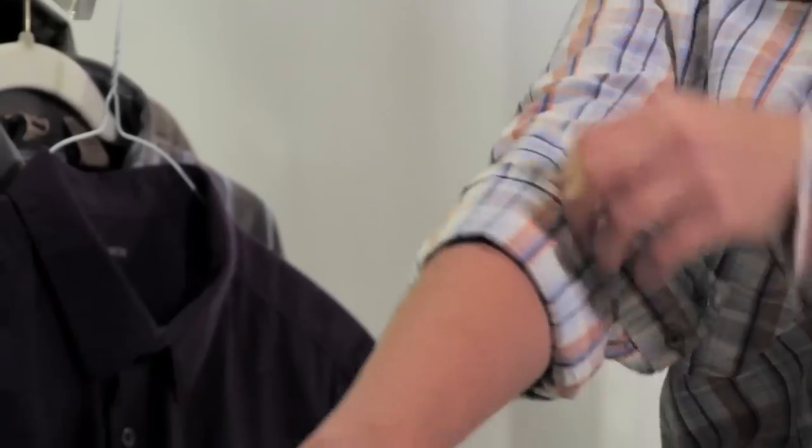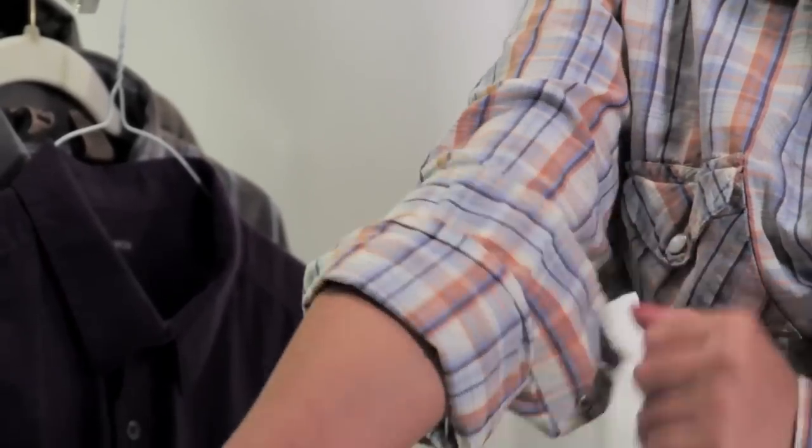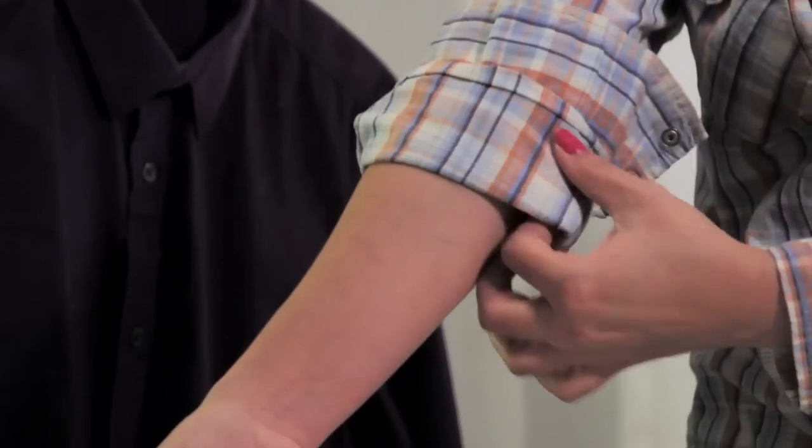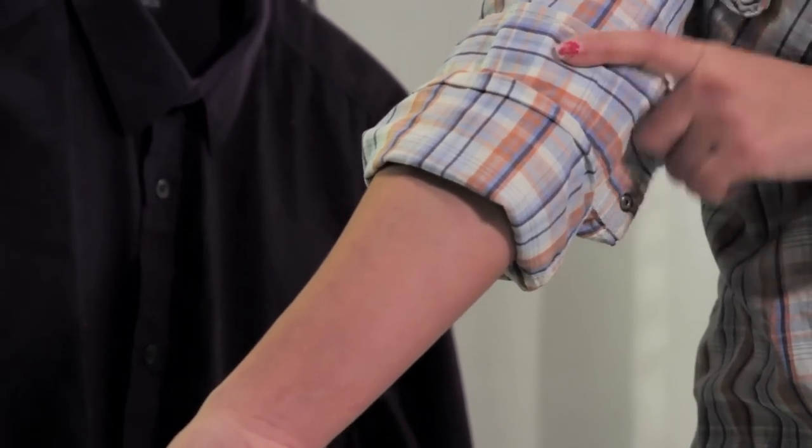Go ahead and straighten everything out and that is the traditional way to do a master roll so the cuff is on the outside.